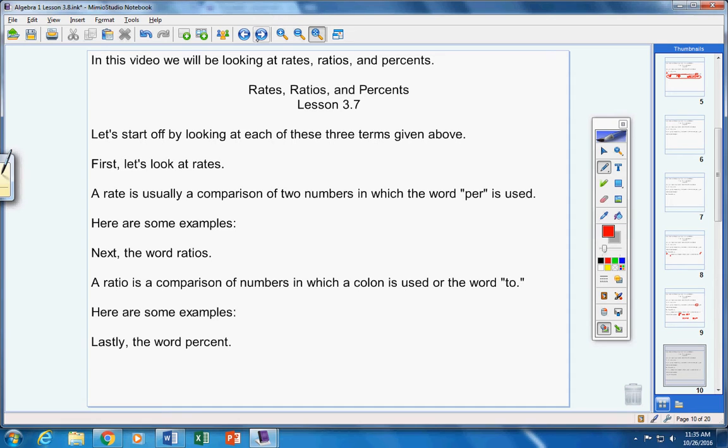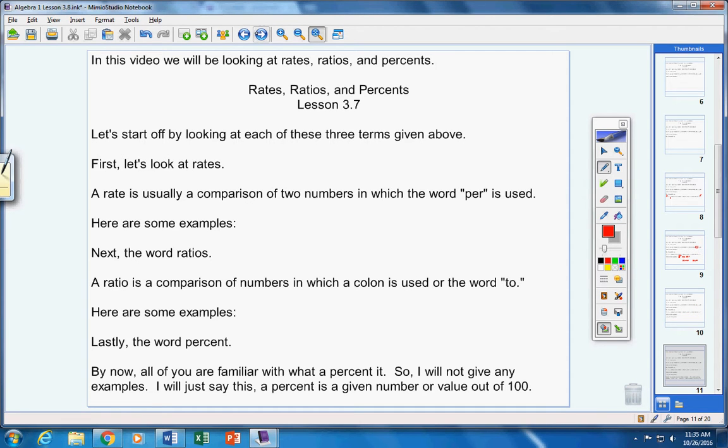Lastly, let's take a look at percent. A percent is a given number or value out of 100. For example, 50% means 50 out of 100, which we know is half. A percentage is a given number or value out of 100, or based on the number 100.